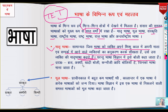For example, Braj, Avadhi, Khadi Boli, Kanauji — all of these are examples. People who speak these languages at home consider them their Maatr bhaasa (mother tongue). However, from a scientific linguistics perspective, these are all dialects (boliyan), which are considered languages here.